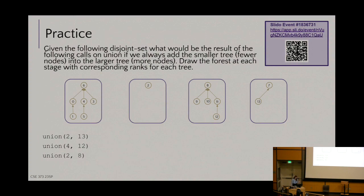I'd like you to draw out what the results would be after calling these three unions. Remember: when you call union, you find the representative of both items you're unioning — that tells you which two sets to combine. You're not just combining two nodes, you're combining two sets. We're going to add the optimization of adding the smaller tree into the larger tree. If there's a tie, there might be multiple correct answers.